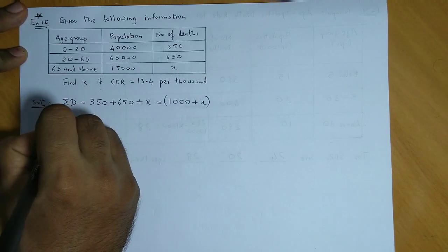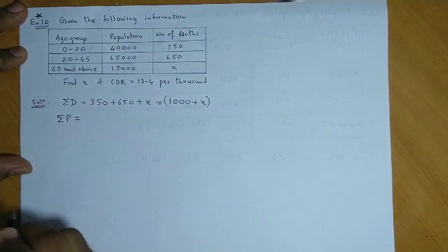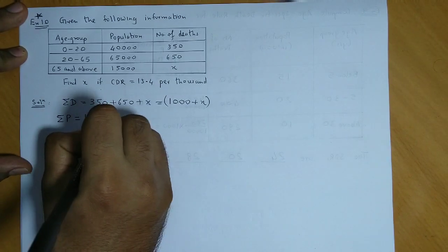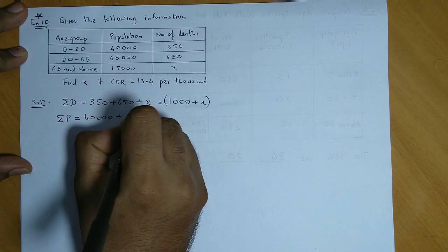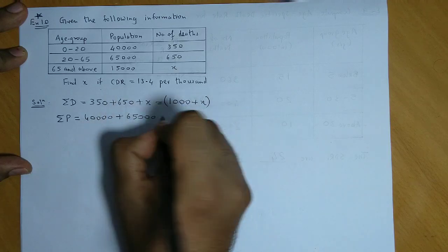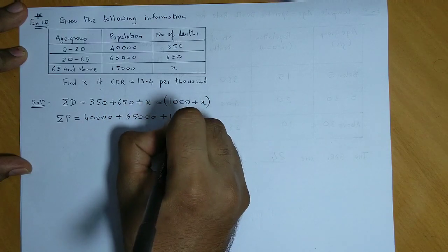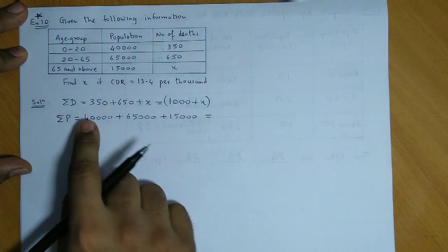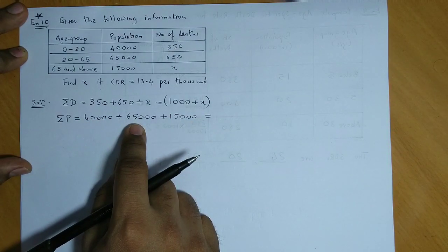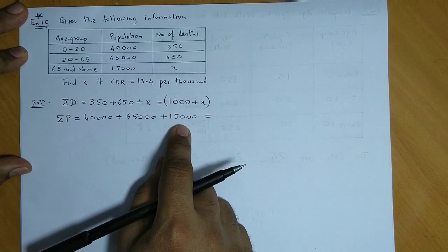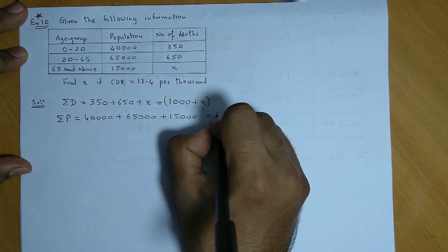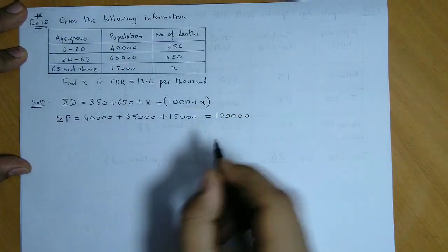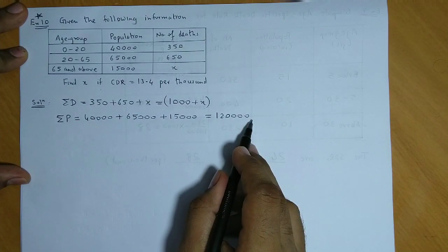Next, we find the total population, that is summation P. The first population is 40,000, next is 65,000, and last is 15,000. Adding these together: 40,000 plus 65,000 plus 15,000 gives us 1,20,000. So the total population is 1,20,000.